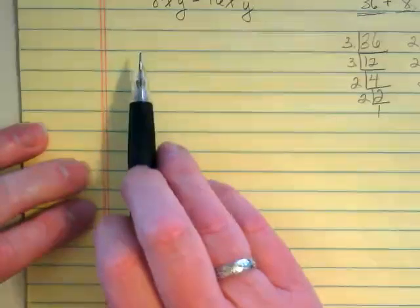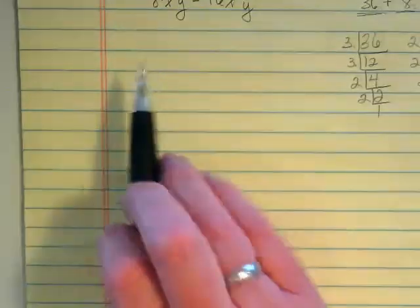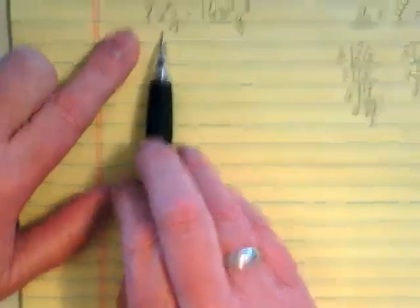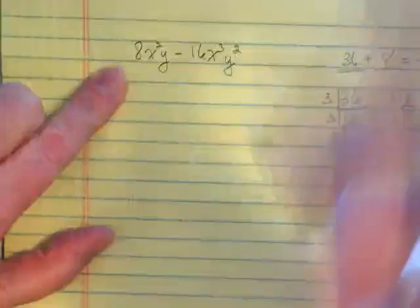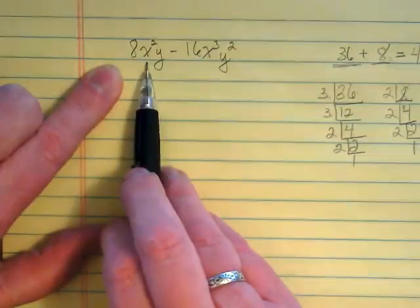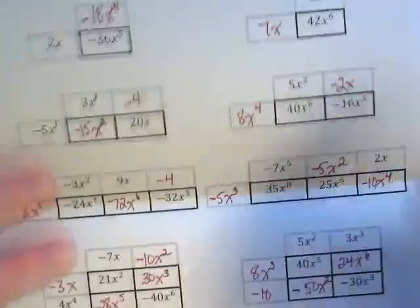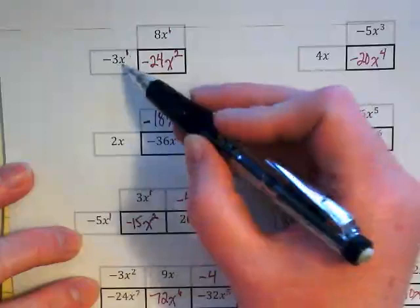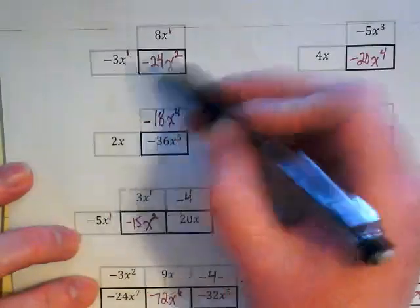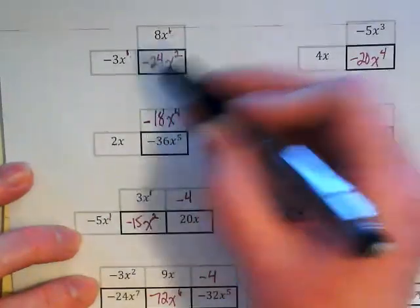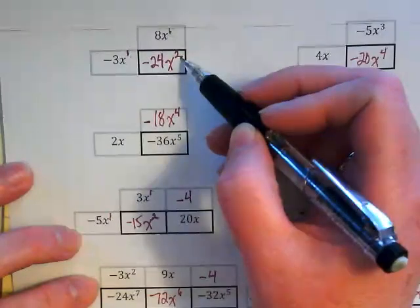The same thing is happening when we're factoring out and looking for the greatest common factor of things with variables. I'm going to take you back to what we talked about yesterday with this. If I'm multiplying x times x, those 2 invisible ones got added together to become x squared.